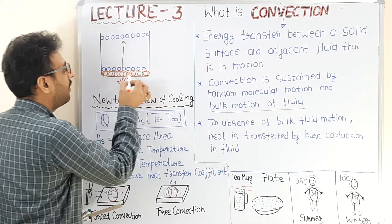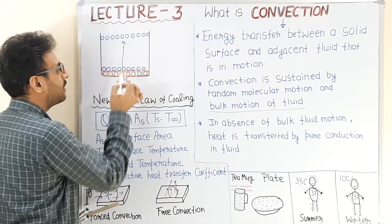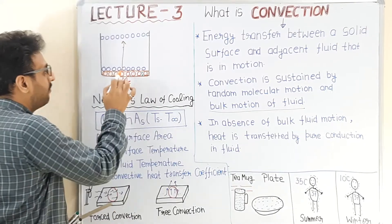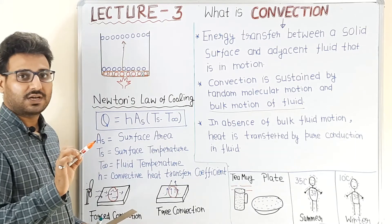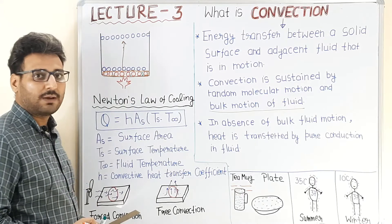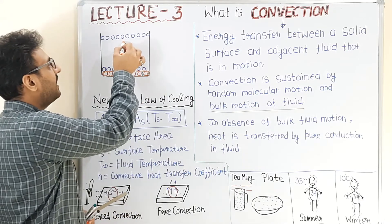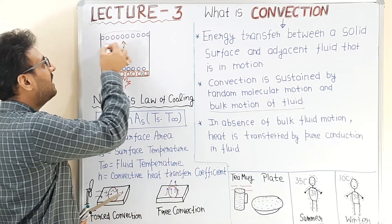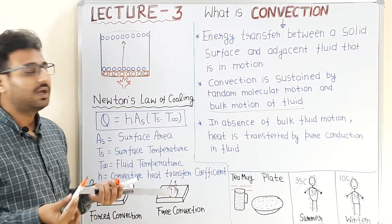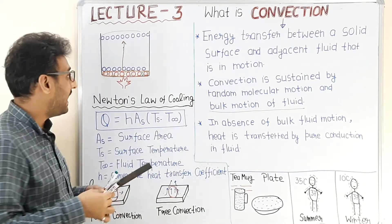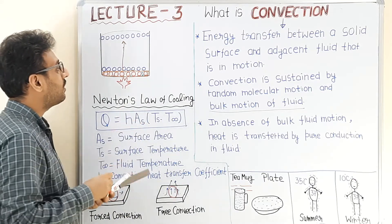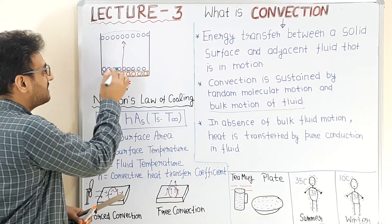In this layer, fluid particles or molecules are having random molecular motion due to their temperature. If this layer is transferred to the region of low temperature, it will transfer its heat to that region, and in this way heat can be transferred within a fluid medium.